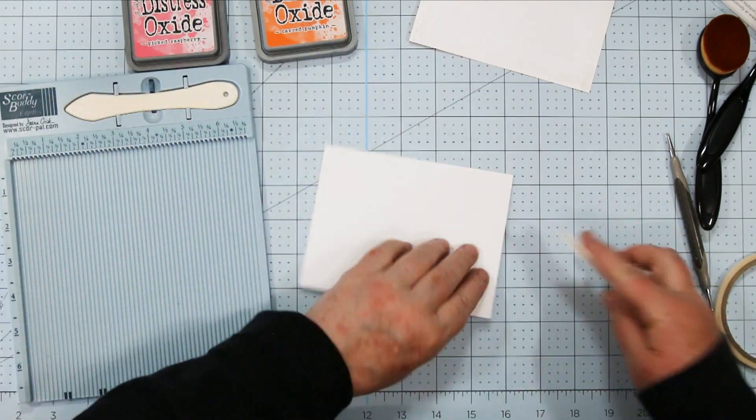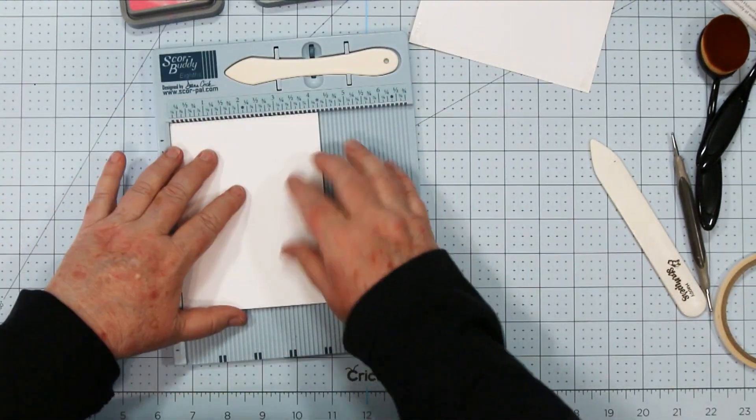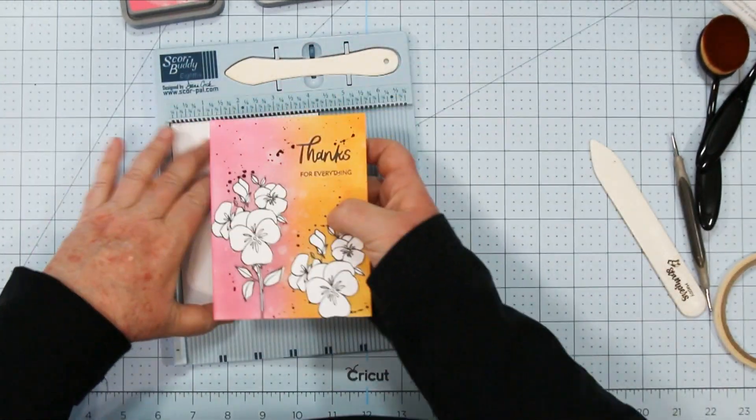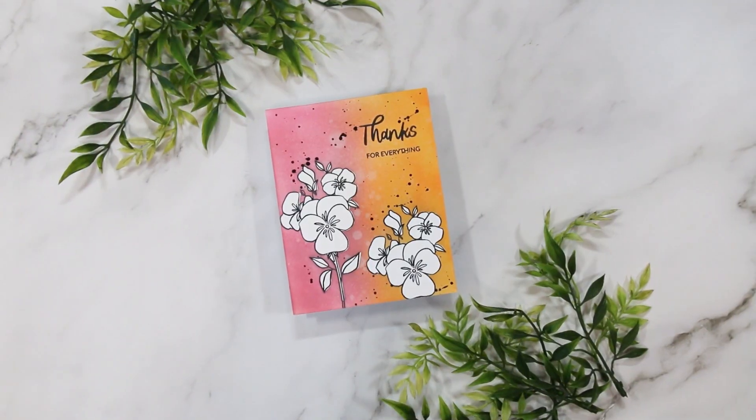And I'll show you a secret about getting your card front on there. You're going to place the card base back into the left hand corner of your score buddy. And then use the side and the top to line up your card front and get it on there perfectly straight.